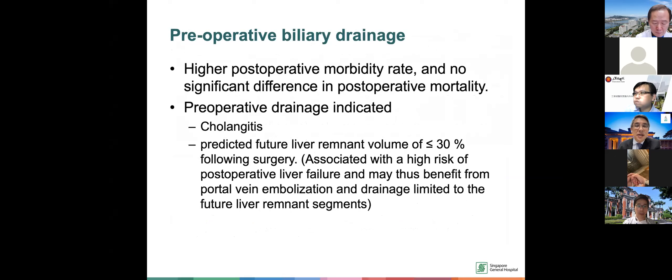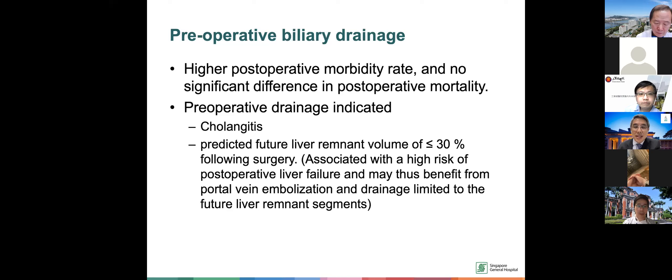Regarding stenting before surgery, the answer is generally we try not to, unless there are indications such as cholangitis or the surgeon requests it — for example, when predicted residual liver volume after resection is low. They want us to stent the liver lobe to be left behind, and they usually do portal vein embolization to cause contralateral hypertrophy. We put a biliary stent to prevent cholangitis due to partial ischemia. These are the indications for preoperative biliary stenting prior to hilar surgery.